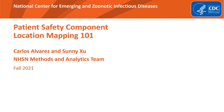Welcome to the National Healthcare Safety Network, or NHSN, Quick Learn series. These are brief and informative presentations from the Centers for Disease Control and Prevention. They serve as an educational resource for healthcare facilities working to prevent healthcare-associated infections, or HAIs. This Quick Learn will provide an introduction to location mapping in the patient safety component of NHSN.